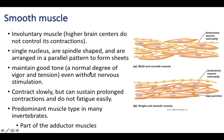Smooth muscles maintain a tone — a normal degree of vigor and tension even without nervous stimulation. They slowly contract, but they can sustain prolonged contractions and do not fatigue easily. Smooth muscles can contract or relax, but they don't get tired.